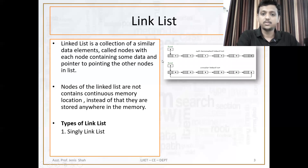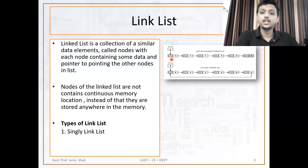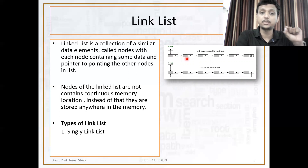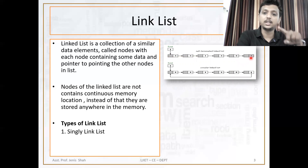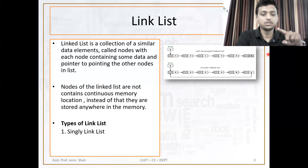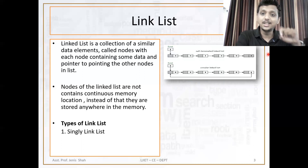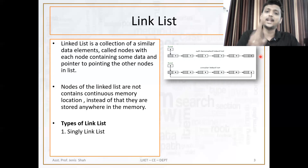The node contains two things: one is data, one is pointer. The pointer points to the next node of the list. And the last node of the list — is this node pointing to any other node? No. That means it is pointing to null. In any linked list, if the last node is pointing to null, that linked list is known as a singly linked list.